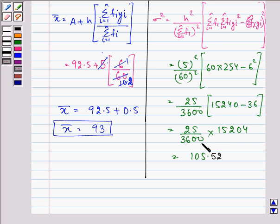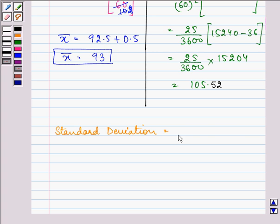Now we need to calculate standard deviation, and that is under the root 105.52, and that is 10.27, approximately.